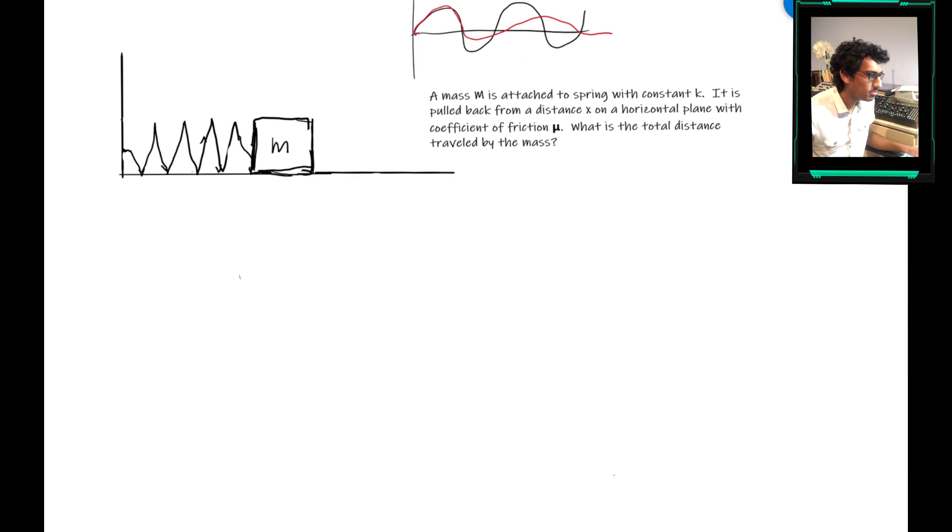So the spring will have the potential elastic energy initially, that would equal one half k x squared. And now let's just draw what this would look like. It would be pulled back to here, and then x.